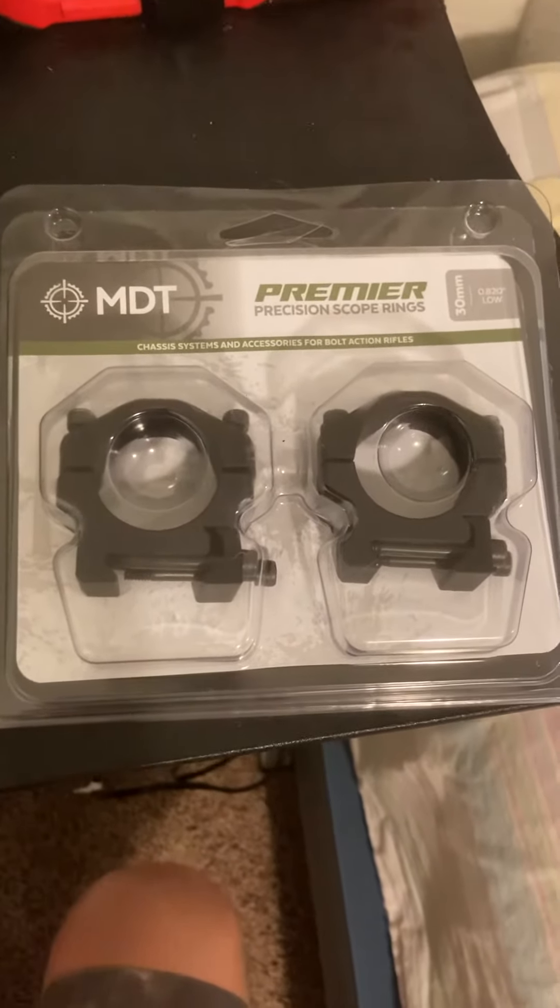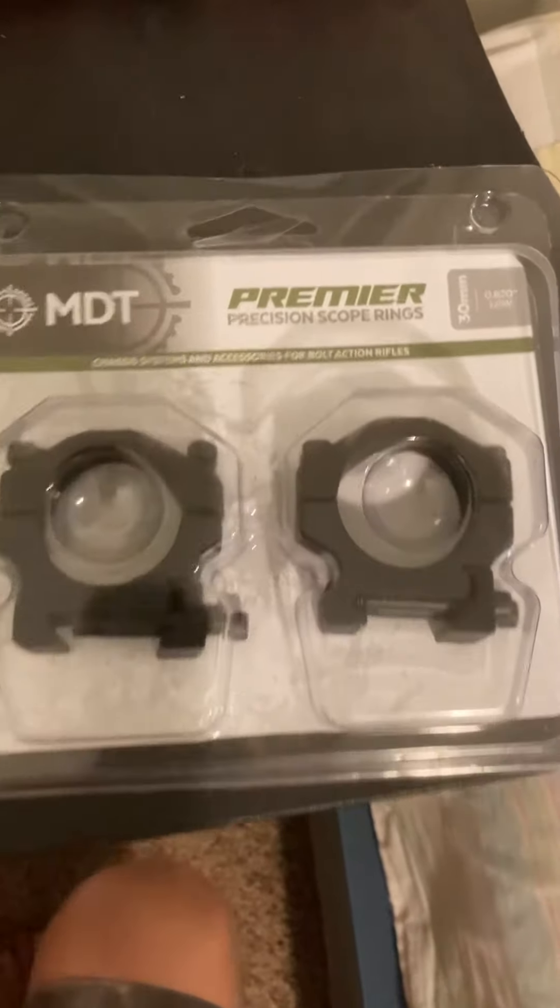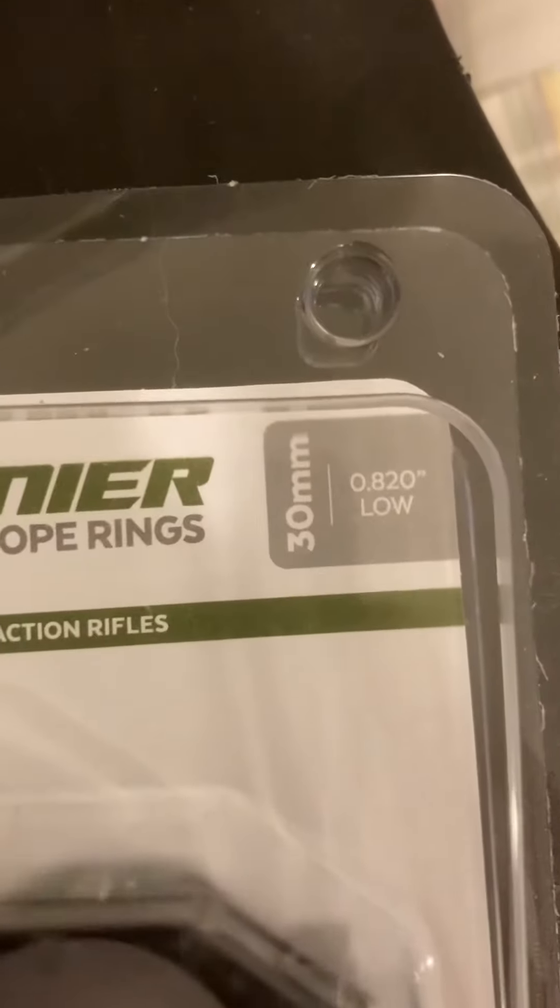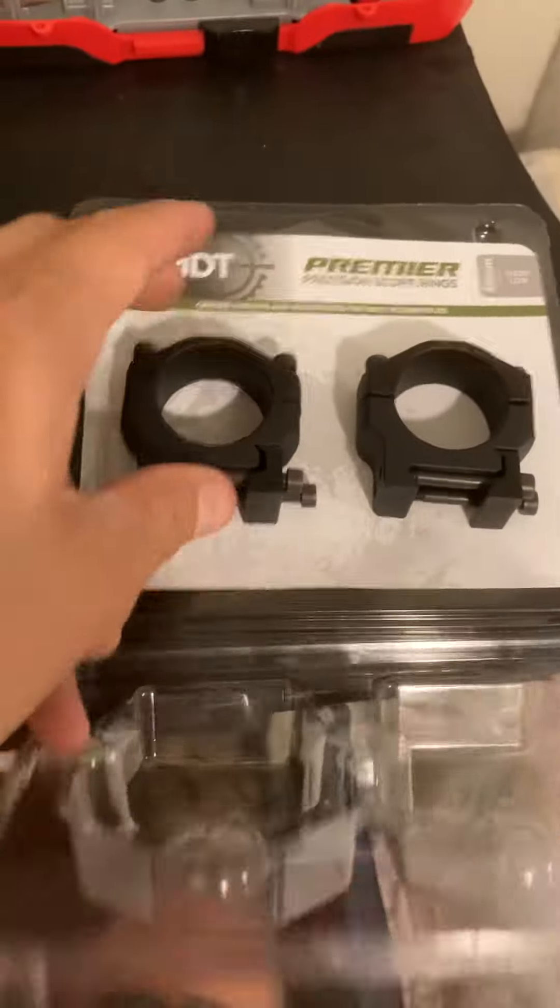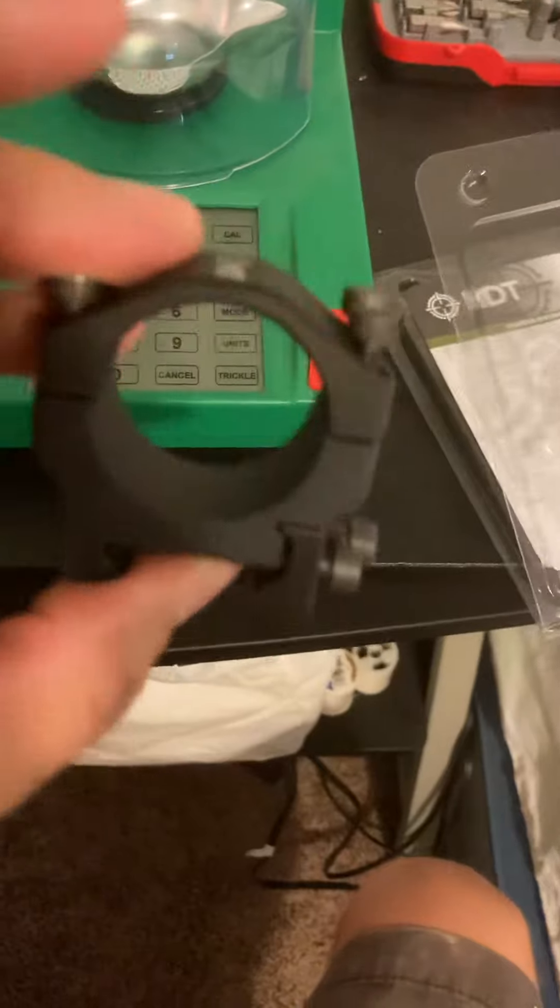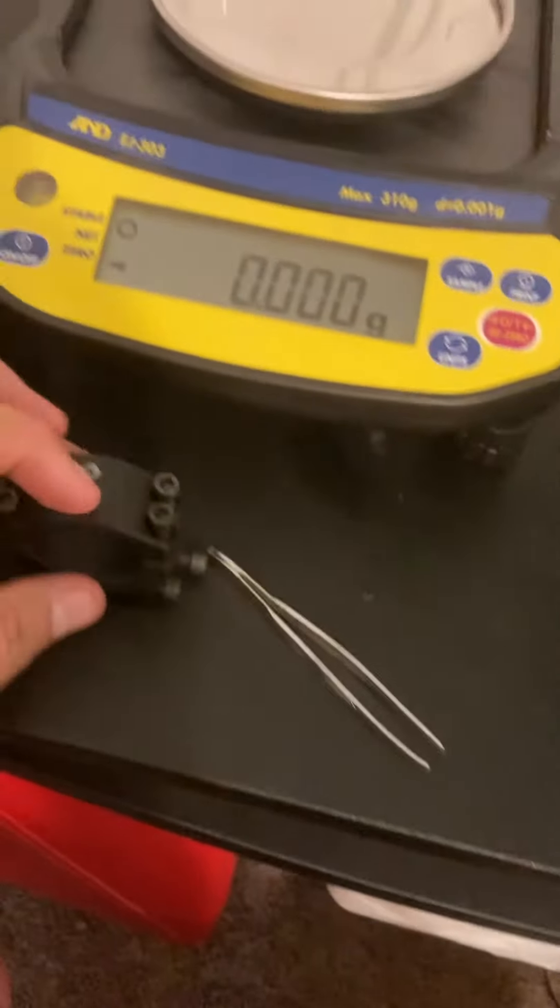So what I have here is the low MDT Premier scope rings. You can see that's 0.820 inches, 30 millimeter. I couldn't find on the internet how much these weighed, so I just figured I would make a video.